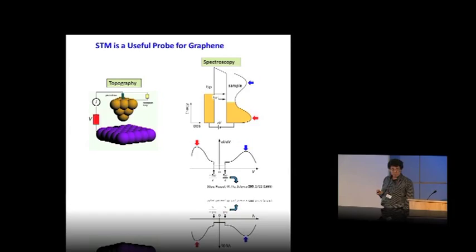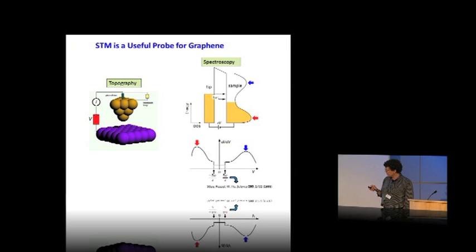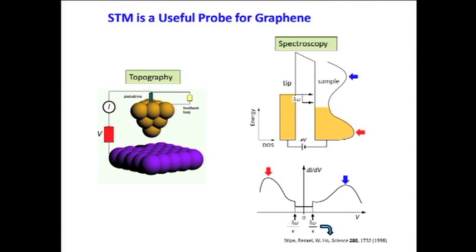A scanning tunneling microscope is a sharp metal needle which we bring very close to a surface. We put a voltage between the needle and the surface and measure the tunnel current. The rate at which electrons tunnel from the tip to the surface is proportional to the electronic local density of states of the structure beneath the tip. This is very useful because the local density of states gives you a measure of the probability of finding an electron at a certain point in space and at a certain energy, so you can learn a lot about what electrons are doing in small structures.